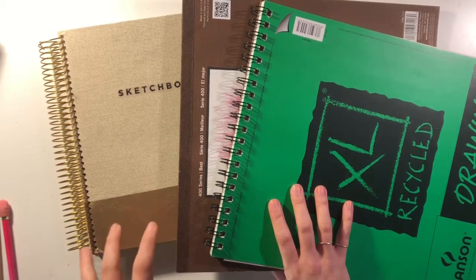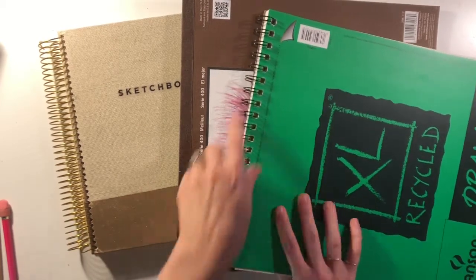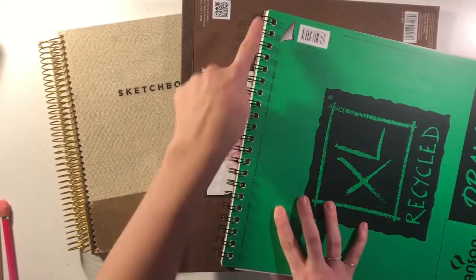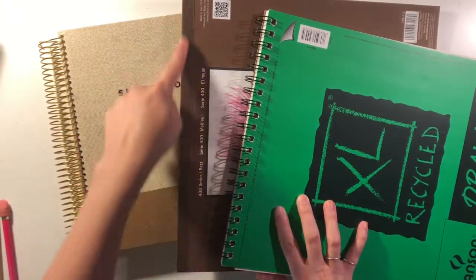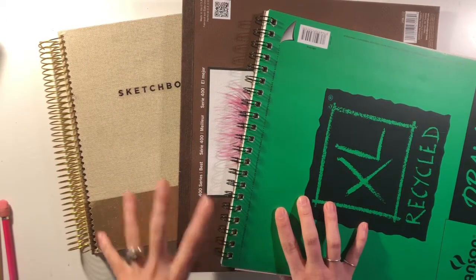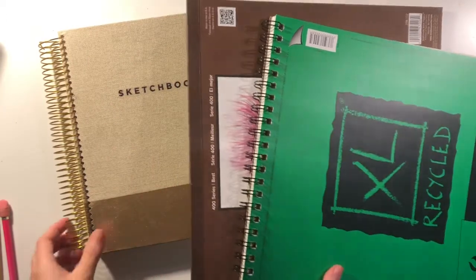The mixed media paper works better. You may have purchased a sketchbook that has a spiral bound edge or this smooth edge where it's sort of hinged with glue. Either one of those will work for what we're going to do today.